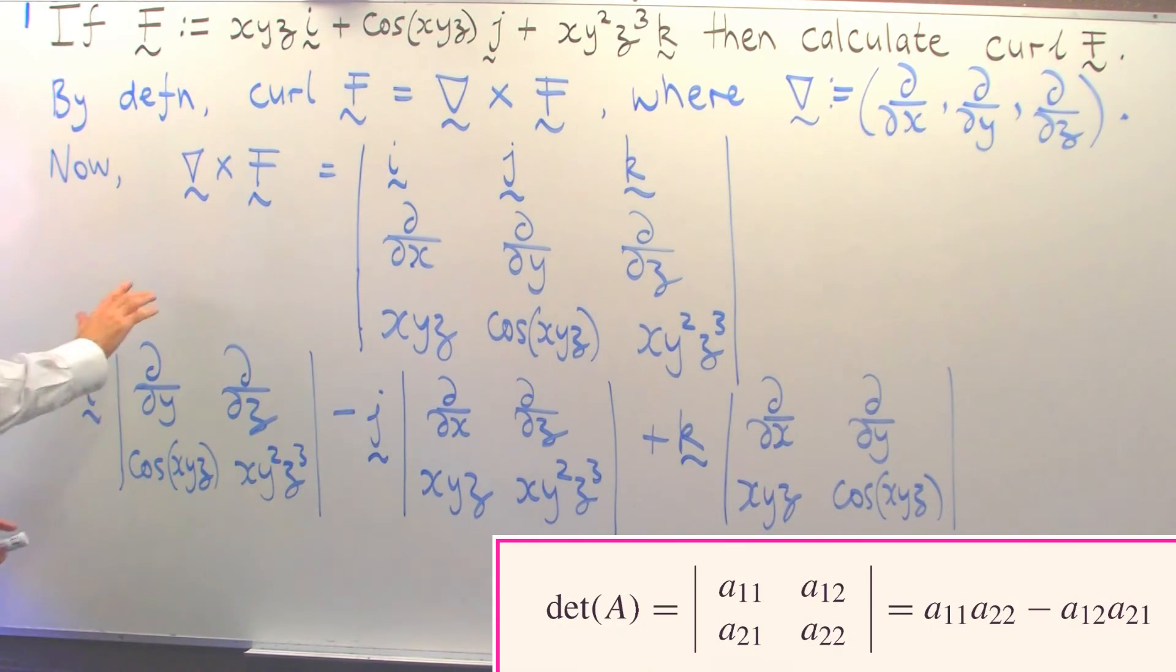Remember with 2 by 2 determinants, we do a cross multiplication, so it's this times this minus this times this. But remember, we're not really multiplying here. These differentials are operating on these functions.